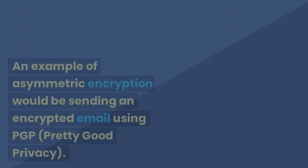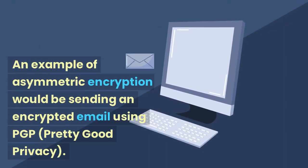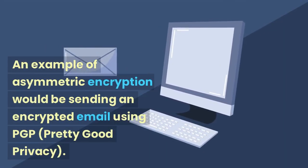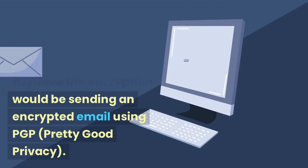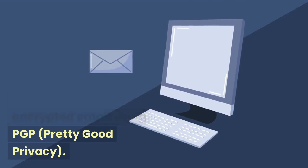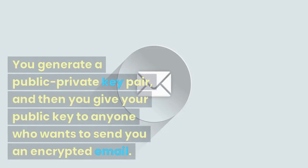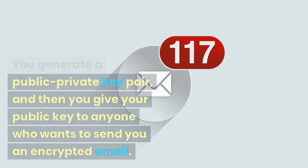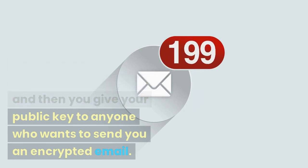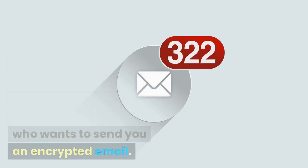An example of asymmetric encryption would be sending an encrypted email using PGP, pretty good privacy. You generate a public-private key pair, and then you give your public key to anyone who wants to send you an encrypted email.